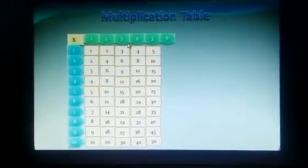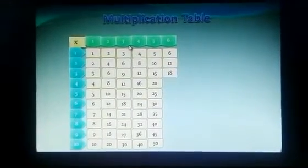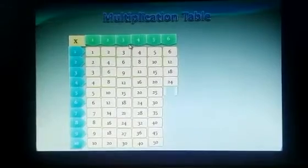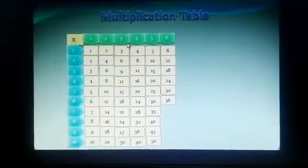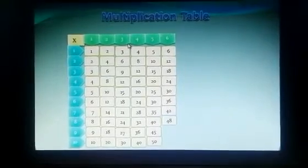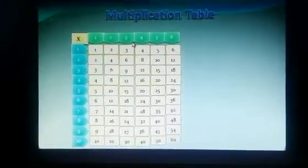Times table of 6. 6 times 1 is 6, 6 times 2 is 12, 6 times 3 is 18, 6 times 4 is 24, 6 times 5 is 30, 6 times 6 is 36, 6 times 7 is 42, 6 times 8 is 48, 6 times 9 is 54, 6 times 10 is 60.